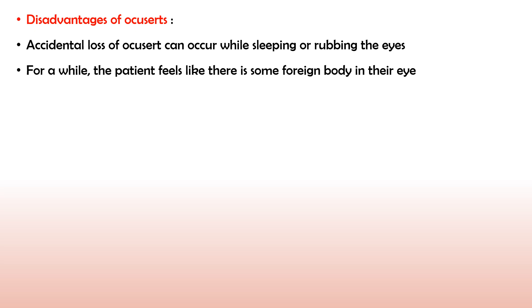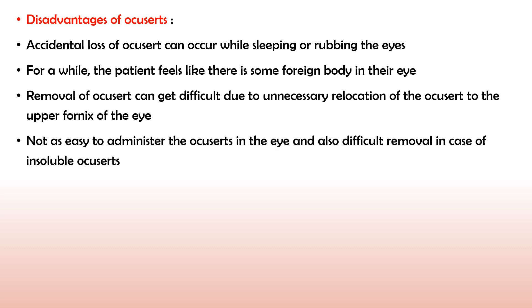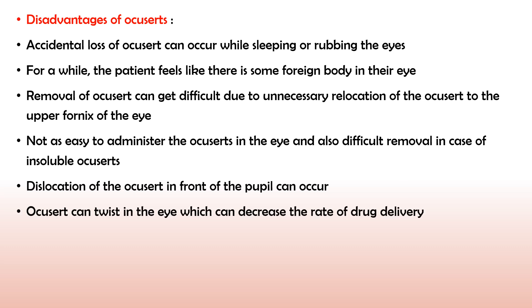The disadvantages of Ocuserts include possible accidental loss while sleeping or rubbing the eyes. For a while, the patient may feel irritation or the presence of a foreign body in the eye. Removal can be difficult due to unwanted relocation of the Ocusert to the upper fornix. Administration and removal are difficult for insoluble Ocuserts. Dislocation in front of the pupil can hamper vision. The Ocusert can twist inside the eye, decreasing the rate of drug delivery, and leakage from the Ocusert may also occur.